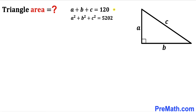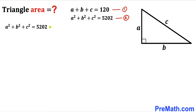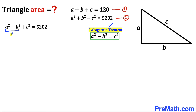Here is our very first step. Let me label these equations — I'll call the first one equation 1 and the second equation 2. Now let's focus on equation 2. Let's recall the Pythagorean theorem: A² plus B² equals C². So wherever I see A² plus B², I'm going to replace it with C².